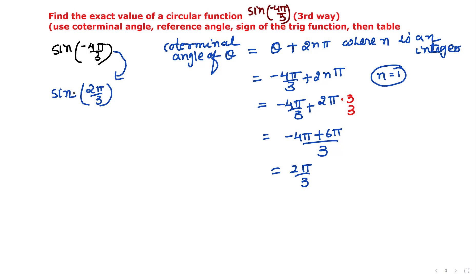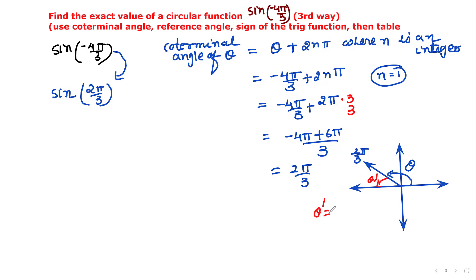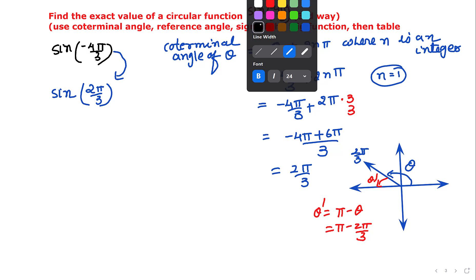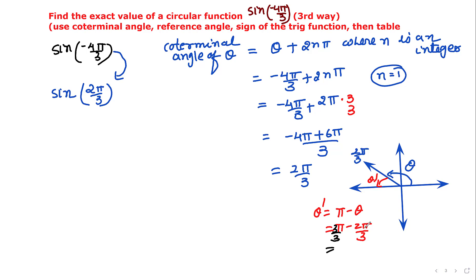Once we have the coterminal angle, we look for the reference angle. The angle 2π/3 is located in quadrant 2. The reference angle formula in quadrant 2 is θ' = π - θ, which gives π - 2π/3. Finding the LCD: (3π - 2π)/3 = π/3. So the reference angle is π/3.